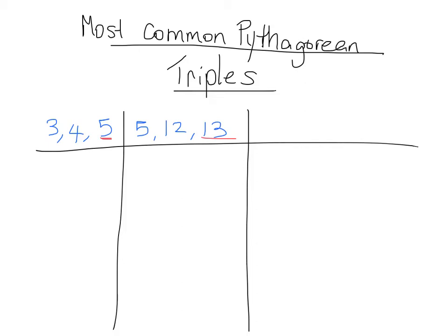Now the other two that come up often and more so on the ACT than the SAT are the 8, 15, 17, and of course our hypotenuse is 17, and the 7, 24, 25. And of course if you wanted to check to make sure these are in fact right triangles you could do the Pythagorean theorem. You could check with the converse of the Pythag.